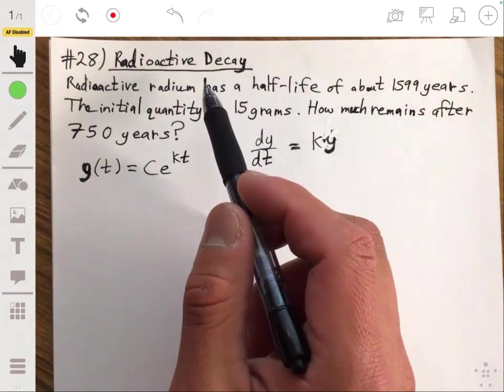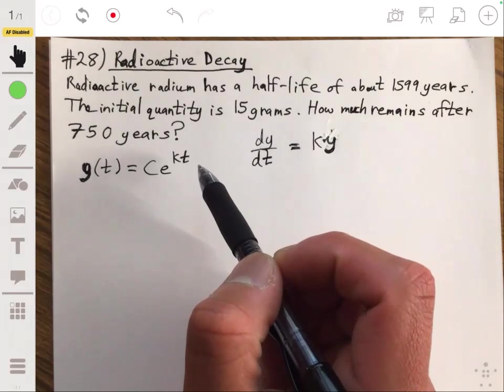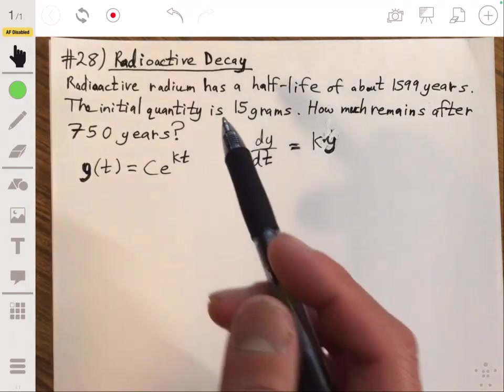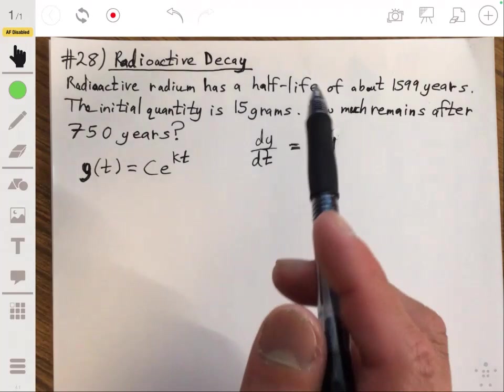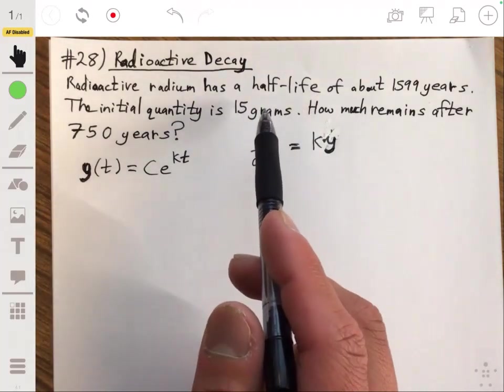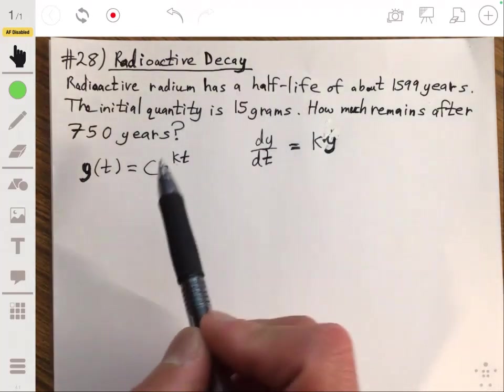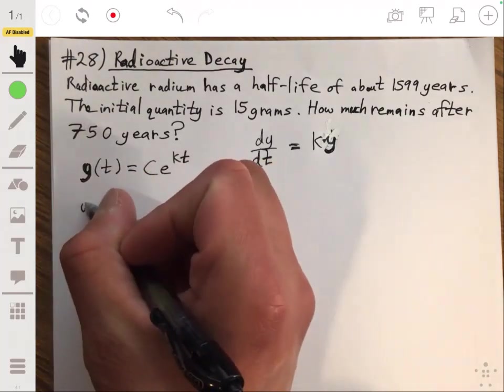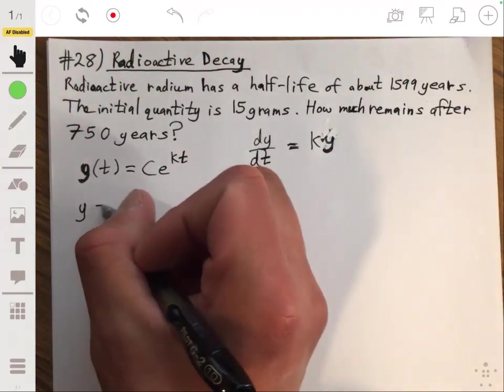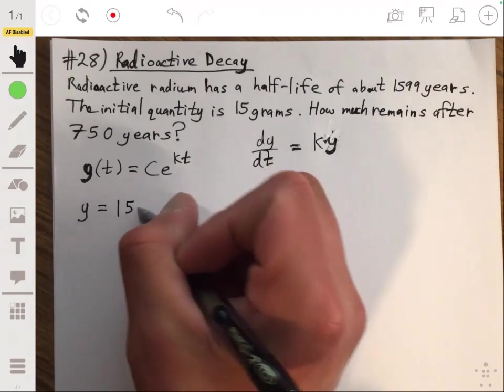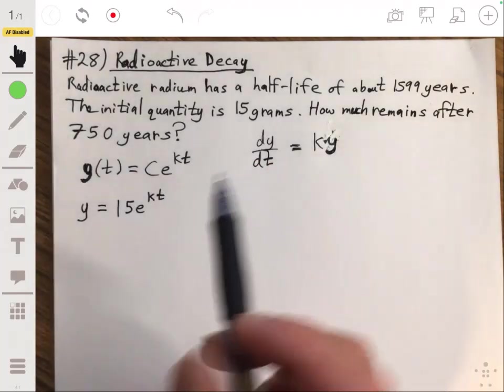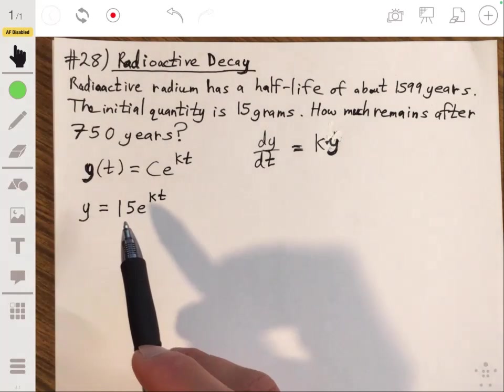So y represents the amount of radium left, t is the time measured in years. So if we are told that the initial quantity is 15 grams, that's what our c is. So we can say then that y is equal to 15e to the kt.